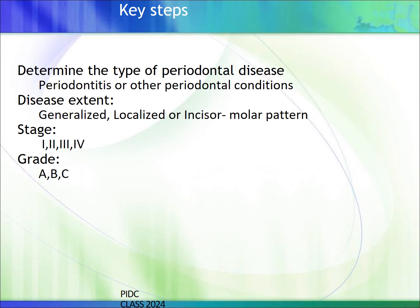To reiterate: determine the type of periodontal disease — periodontitis or other periodontal conditions. Then find the disease extent — whether generalized, localized, or incisor-molar pattern. Then stage it and grade it. These four steps are very important for a periodontitis patient. In exams, you will have Modified Essay Questions (MEQs) where you must write the type of disease, disease extent, staging, and grading.